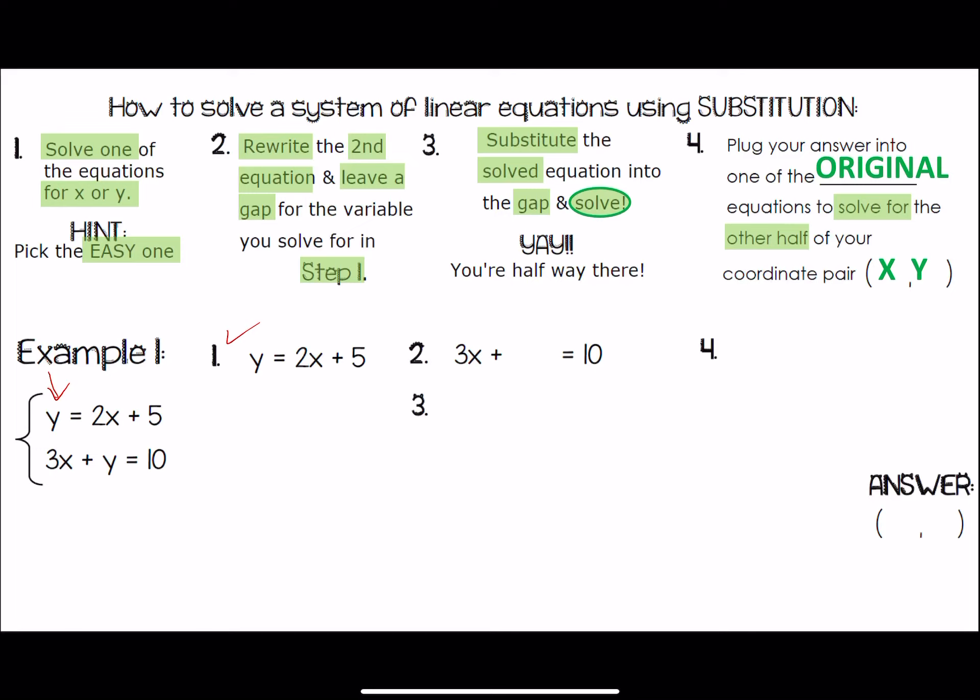Next, you're going to rewrite the second equation, and leave a gap for the variable you solved for. So, I was solving for y. It was y equals whatever, whatever, whatever. Well, wherever that y is, I left a gap in here. And what's going to end up happening is, this entire thing that's equal to y, right there, that's going to get dropped into that blank. And now, what you're going to do, after you've substituted that solved equation in, which is technically step three right here, you're going to simplify.